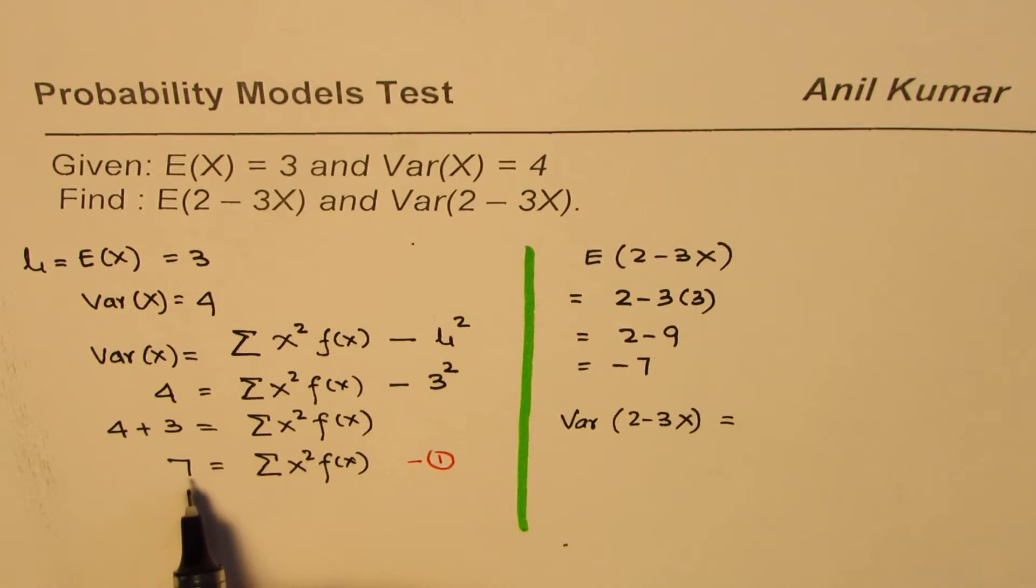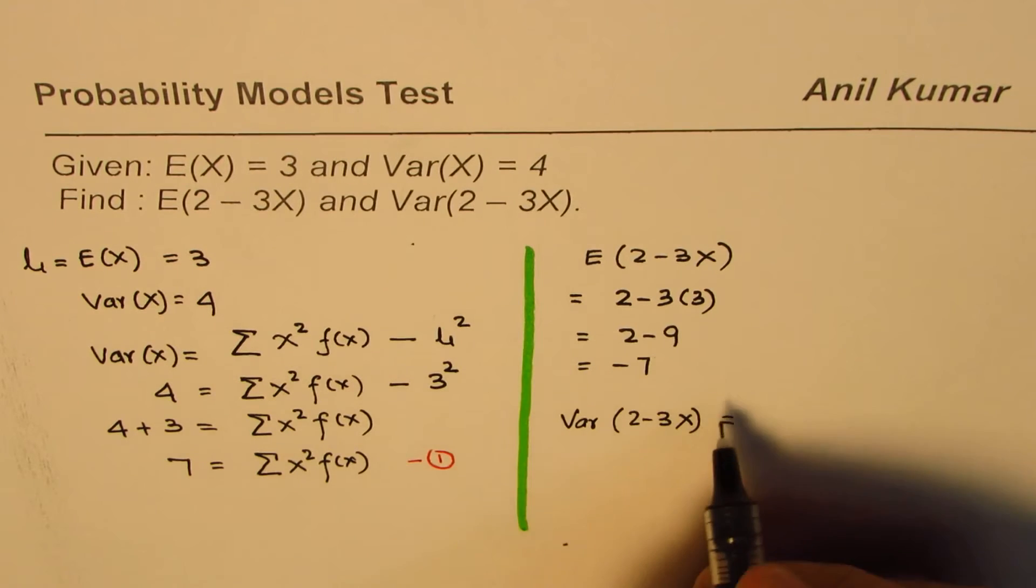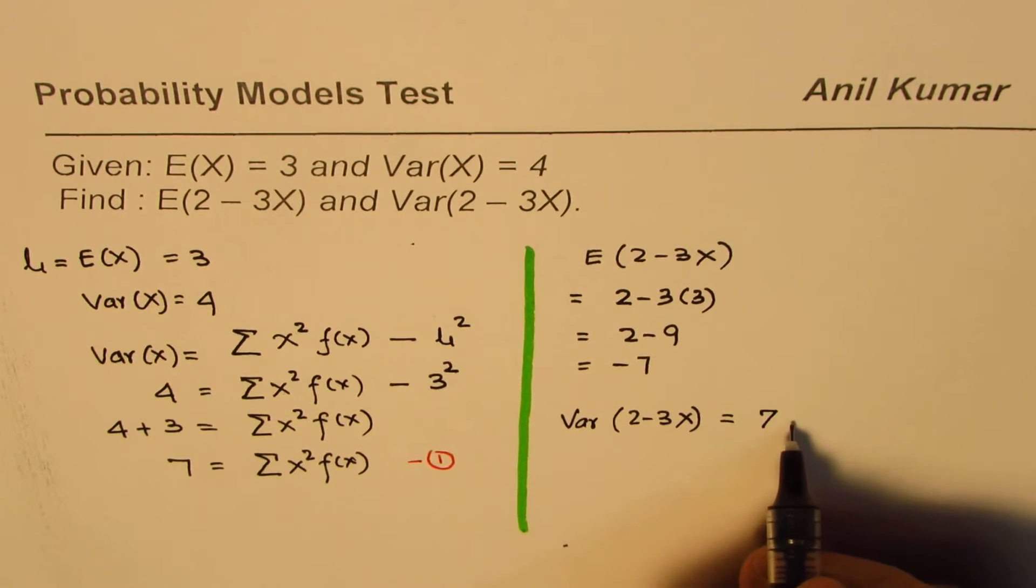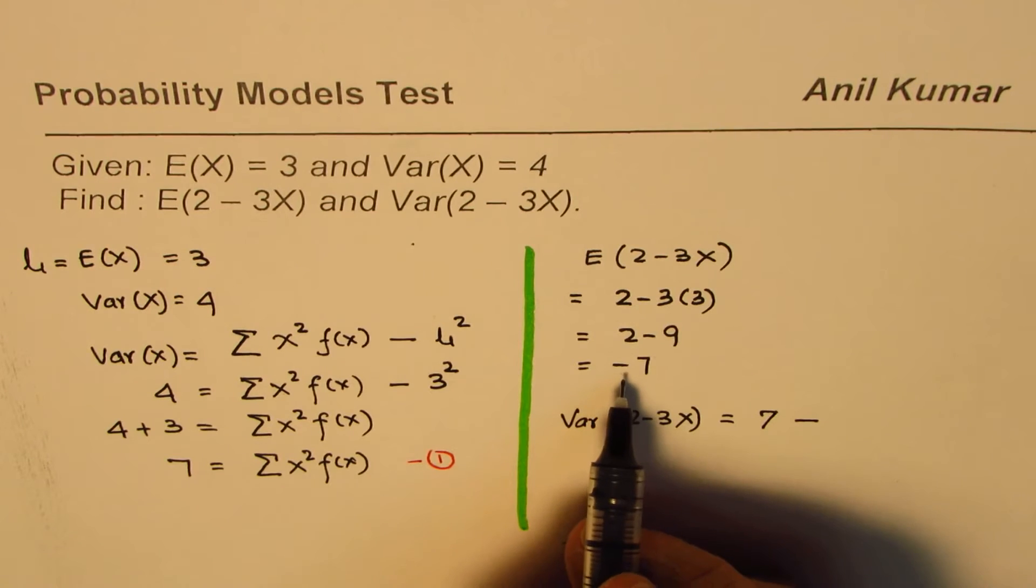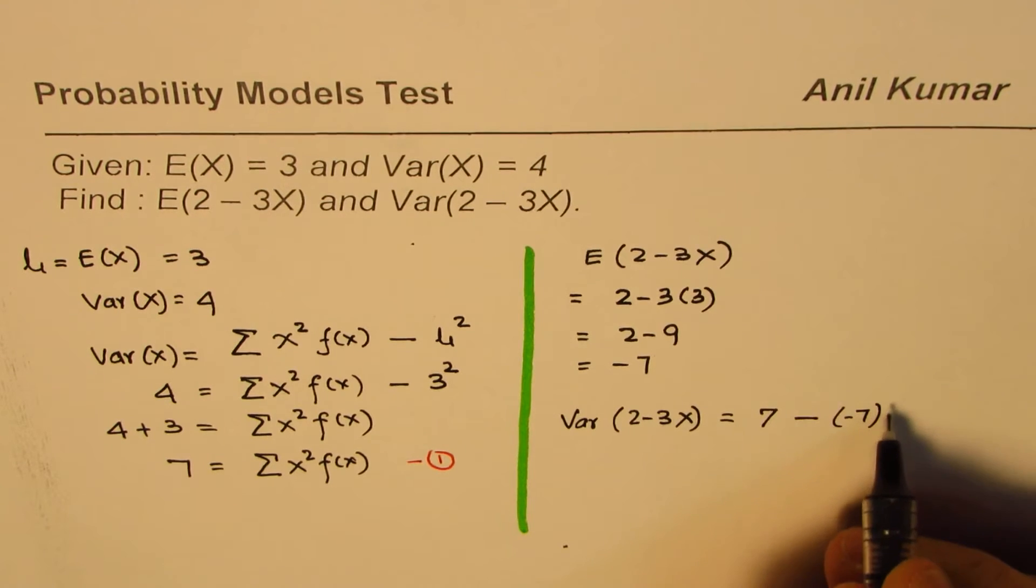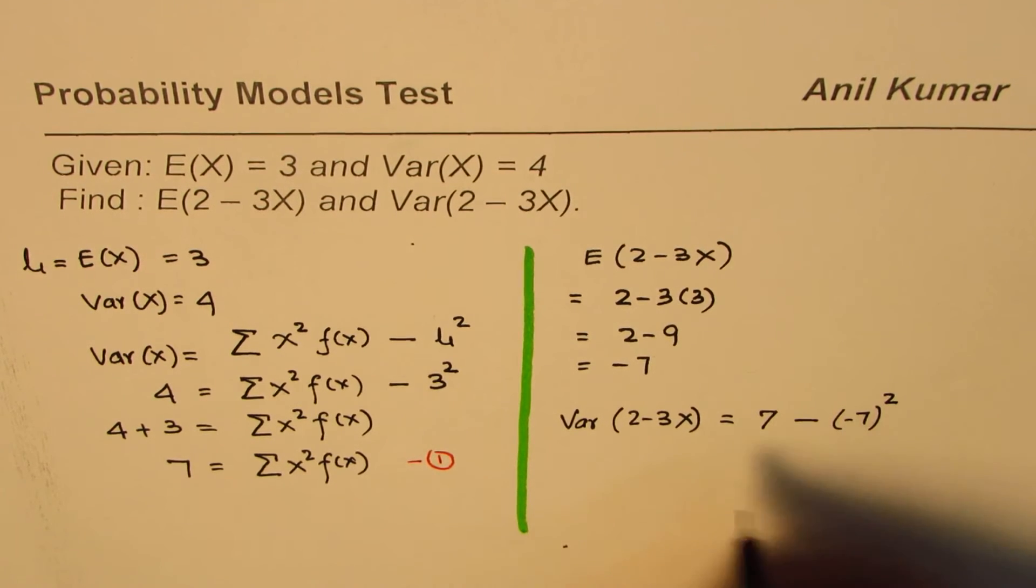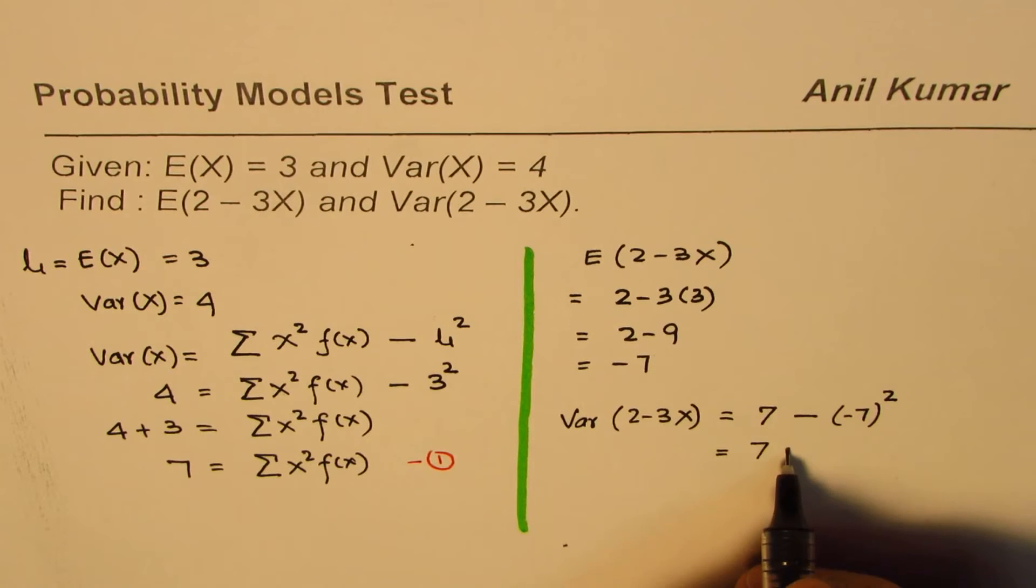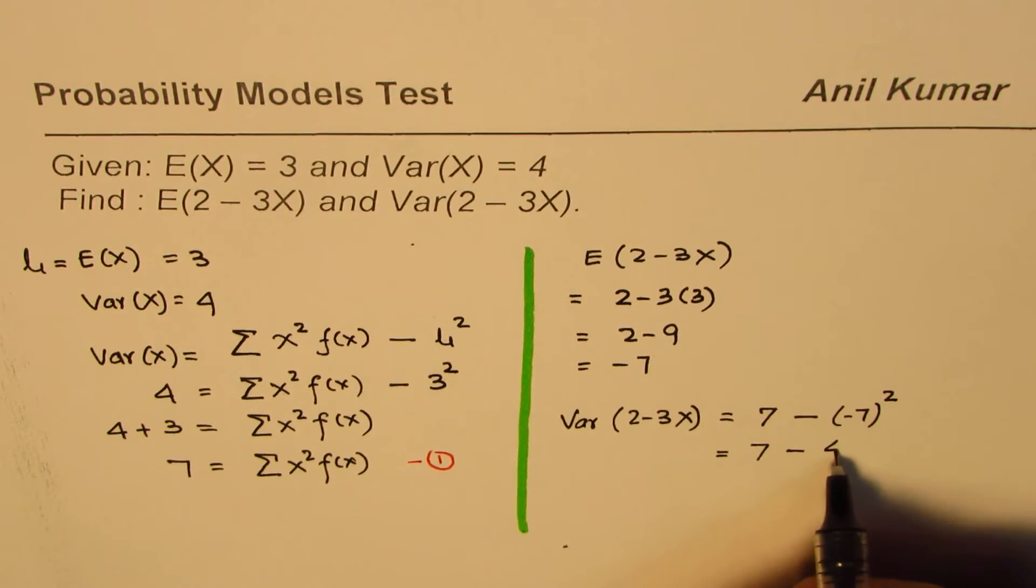Now this quantity here is 7. So we have 7 minus the mean square, which we have calculated as minus 7. So that is equal to minus 7 whole square. So it is equal to 7 minus 7 square is 49.